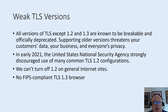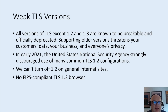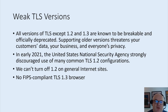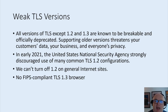All versions of TLS except 1.2 and 1.3 are known to be breakable and are officially deprecated. Supporting older versions of TLS, or worse SSL, threatens the integrity of your network. In early 2021 the US National Security Agency strongly discouraged many common TLS 1.2 configurations, and the NSA has a distressing tendency to predict future cryptographic attacks. We cannot disable TLS 1.2 on the general internet yet — there is no FIPS compliant TLS 1.3 browser. TLS is one of those examples that demonstrates the limits of the robustness principle.